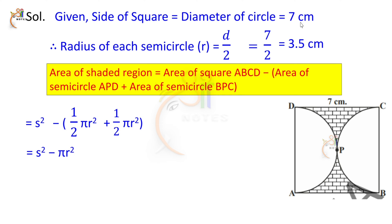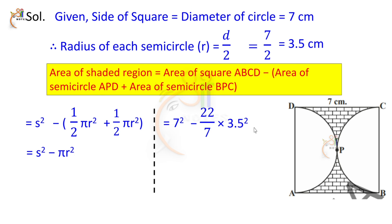Substituting values: S equals 7 centimeters, R equals 3.5 centimeters (that is 7 by 2), and π equals 22 by 7. So we get 7 squared minus 22 by 7 into 3.5 squared, which gives 49 minus 22 by 7 into 12.25.